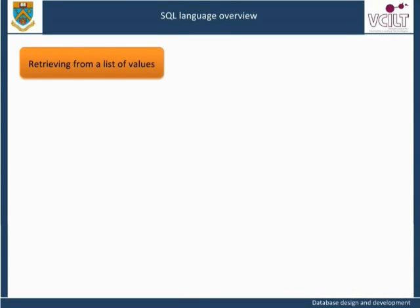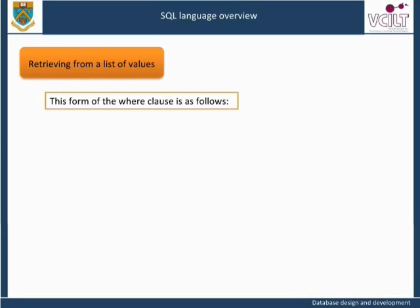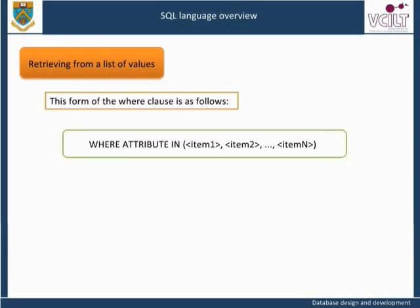Retrieving from a list of values. An alternative solution to the previous OR example is provided by a variant on the syntax of the WHERE clause, in which we can search for values contained in a specified list. This form of the WHERE clause is: WHERE attribute IN (item 1, item 2, ... item n).